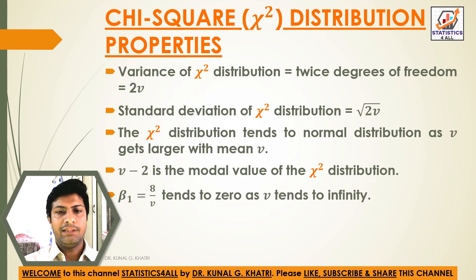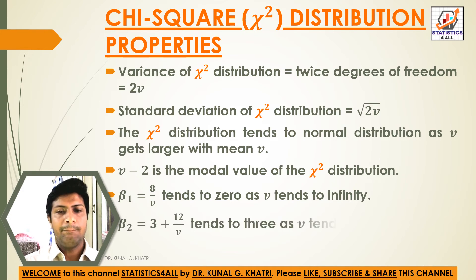Beta₁ is equal to 8/v, which tends to 0 as v tends to infinity. Beta₂ is equal to 3 plus 12/v, which tends to 3 as v tends to infinity.